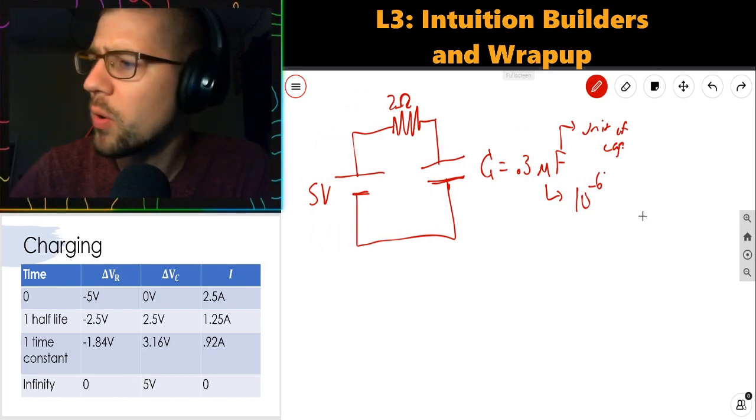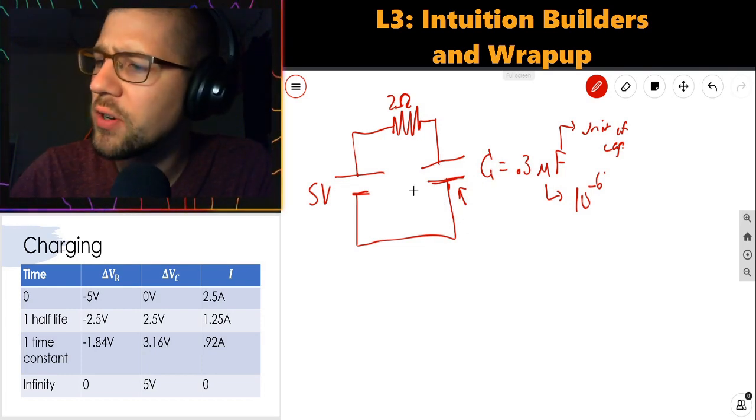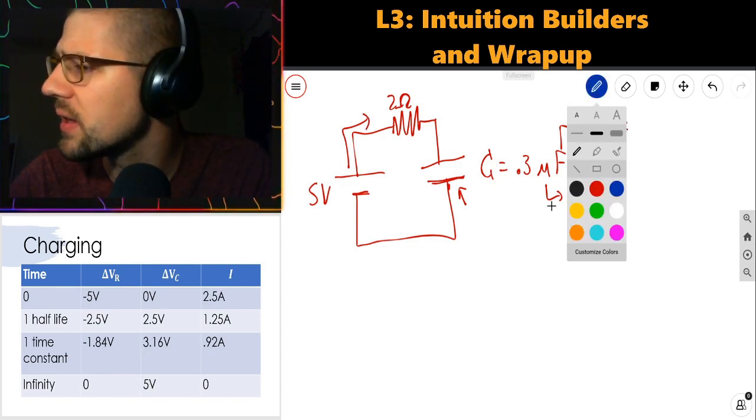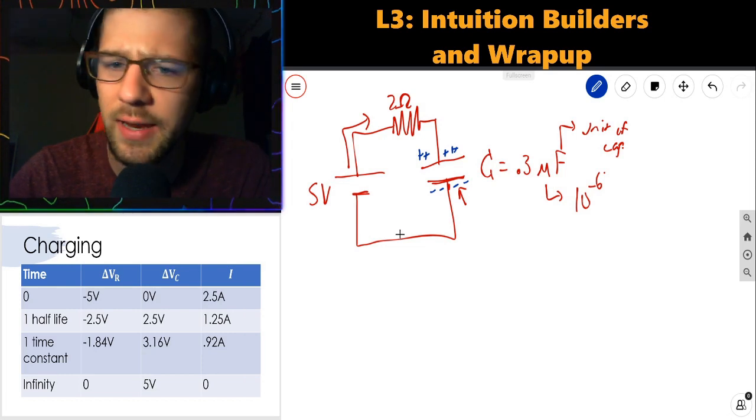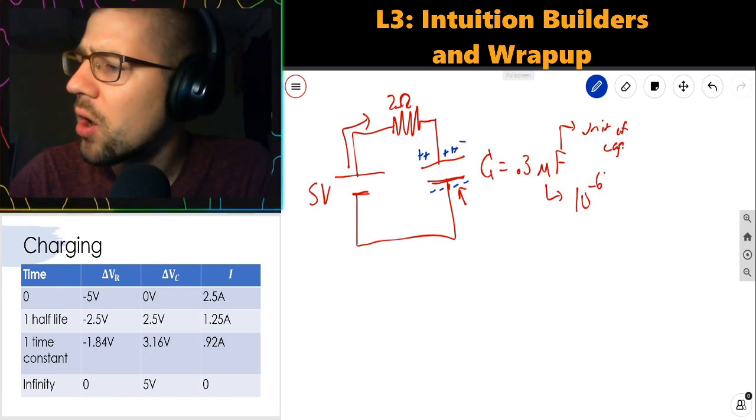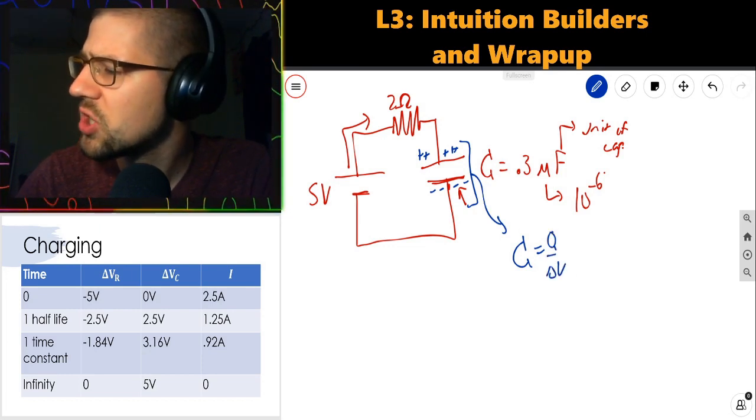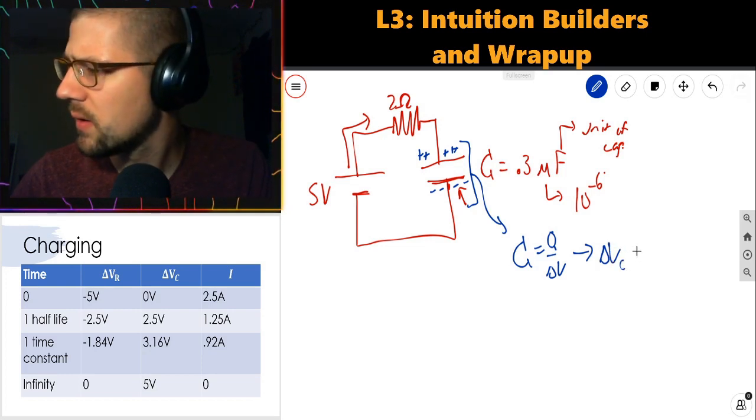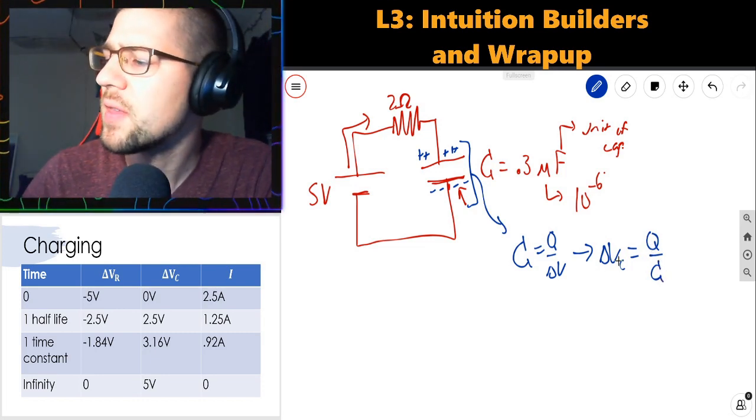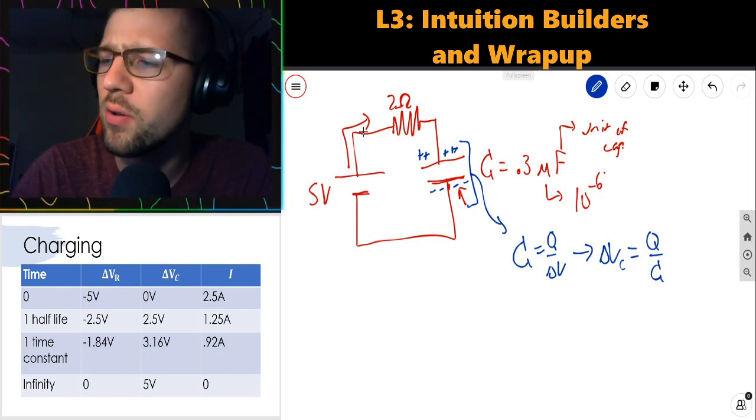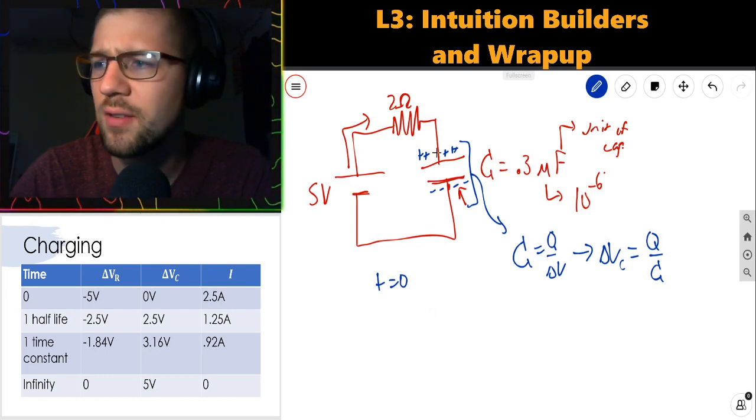Initially, while we're charging, the voltage across the capacitor is 0. It's initially uncharged. Over time, current is going to flow to push positive charges onto the upper plate and negative charges onto the lower plate. At time T equals 0, because there is no charge on the capacitor, and because the capacitance is Q over delta V, the change in voltage across the capacitor is Q over C. Because initially there's no charge on the capacitor, there's no voltage across the capacitor either. So all of the voltage that the battery supplies must be taken up by the resistor.